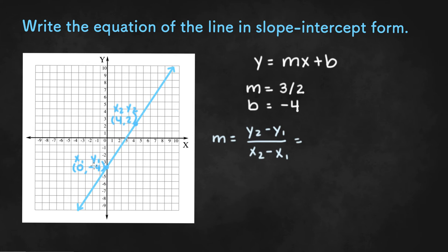So y2 minus y1 is 2 minus negative 4, and x2 minus x1 is 4 minus 0. And so 2 minus negative 4 is 2 plus 4, or 6, and 4 minus 0 is 4. Now we can simplify this to get 3 halves.